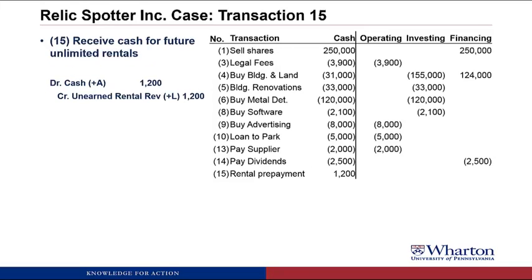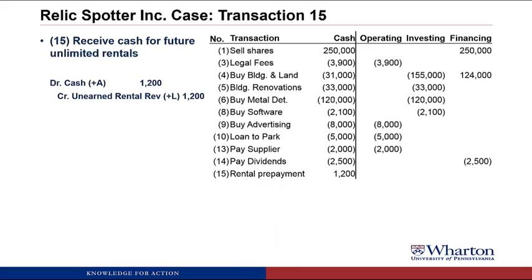In transaction fifteen, Relic Spotter received $1,200 cash from the Penn Antiquities Club for future unlimited rentals. The answer is operating — an operating cash inflow of $1,200 — which makes sense because we're receiving cash from customers, which is one of the definitions of an operating cash flow.